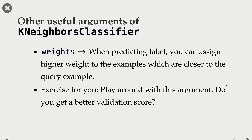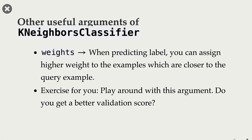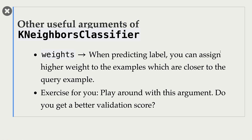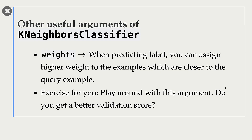There is this other argument, weights, that you can pass to KNN classifier. So far, when predicting labels, we were giving equal weights to all nearby examples. But we can change that using this weights parameter. We can tell it to weigh the examples higher if they are closer to the query point.